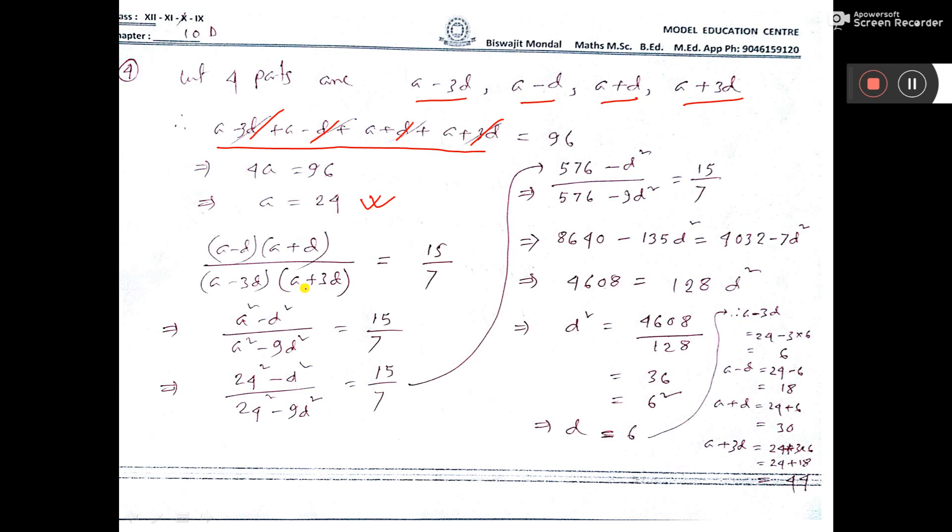And it is telling that the product of their means to product of the extreme. The means are these two middle terms. Product of middle two terms divided by product of the extreme terms, this one and that one, their ratio is 15 is to 7.